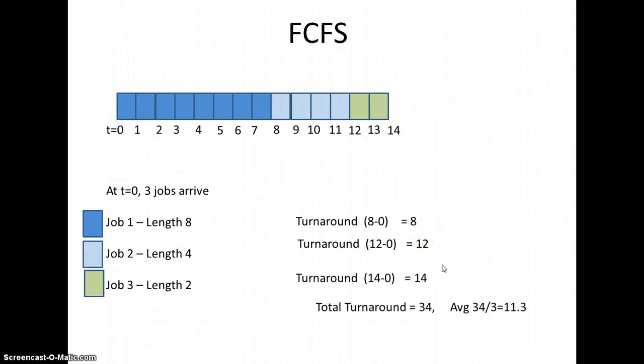So eight plus twelve plus fourteen, the total turnaround time for these three jobs all arriving at the same time, all at time zero, the total turnaround time is thirty-four, so the average is eleven point three.